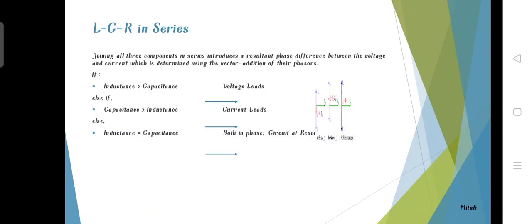For LCR circuit in series, joining all three components in series introduces a resultant phase difference between the voltage and current which is determined using vector addition in phasors. When inductance is greater than capacitance, voltage leads. When capacitance is greater than inductance, the current leads. And when inductance is equal to capacitance, in both cases circuit is in resonance.